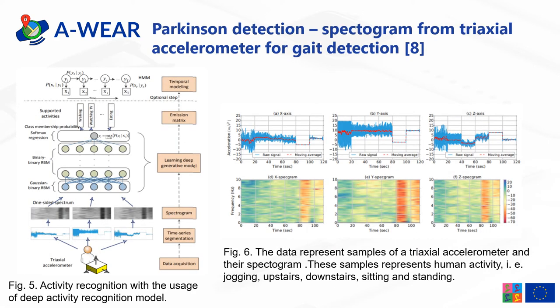In another work, researchers converted triaxial accelerometer signals into spectrograms. They tested their architecture on three datasets, including the DAPHNET freezing of gait dataset of PD patients. The methodology is composed of two steps: an unsupervised pre-training step and a supervised discriminative step. Using deep belief networks, they succeeded in freezing of gait recognition with 91.5% accuracy. This pre-training with feature extraction allowed achieving better quality predictions. On the left side you can see the architecture, and on the right side the data representing samples of triaxial acceleration and a spectrogram — the samples represent human activities: jogging, upstairs, downstairs, sitting, and standing.